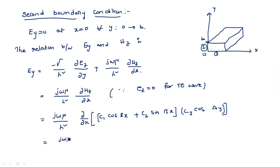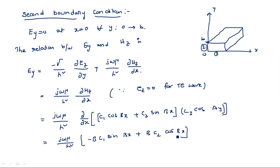After differentiating with respect to x: cos(bx) gives minus b sin(bx), and sin(bx) gives b cos(bx). So ey equals j omega mu over h square times [minus b c1 sin(bx) plus b c2 cos(bx)] times c3 cos(ay). Now apply the second boundary condition: ey equal to zero at x equal to zero. Since sin(0) equals 0 and cos(0) equals 1, we get b times c2 times c3 cos(ay) equal to zero.